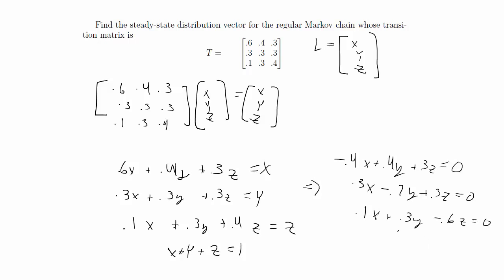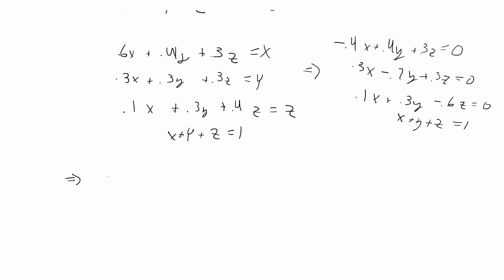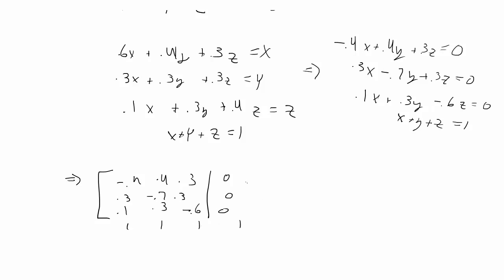And we also have X plus Y plus Z equals 1. Rewriting that as an augmented matrix, we get four rows: [−0.4, 0.4, 0.3 | 0], [0.3, −0.7, 0.3 | 0], [0.1, 0.3, −0.6 | 0], and [1, 1, 1 | 1]. Let's put that in the calculator and do row reduction.